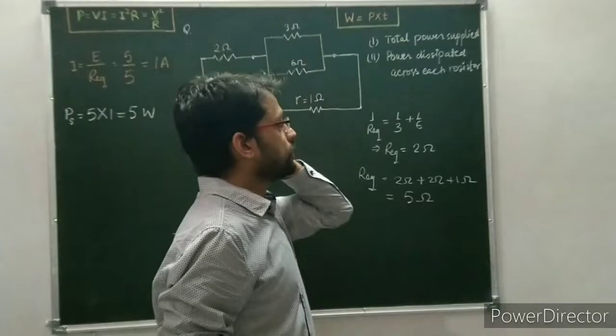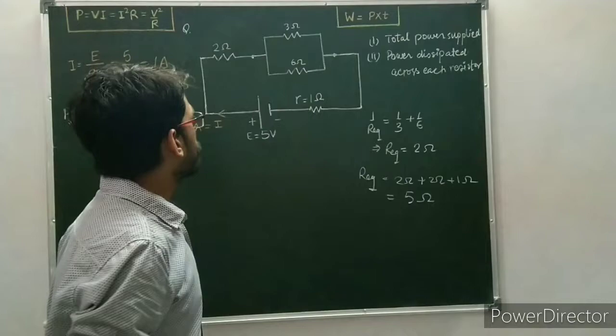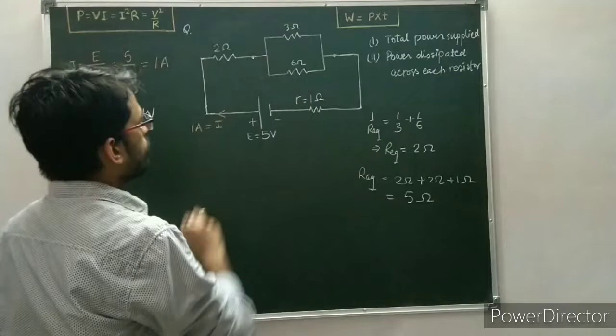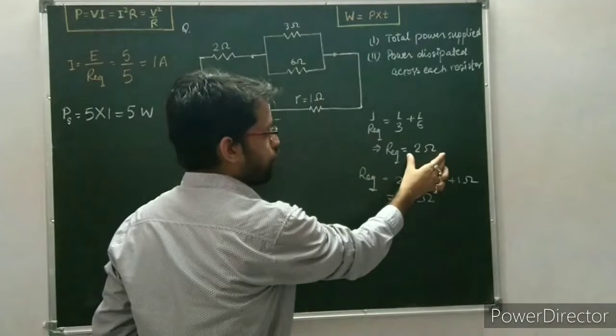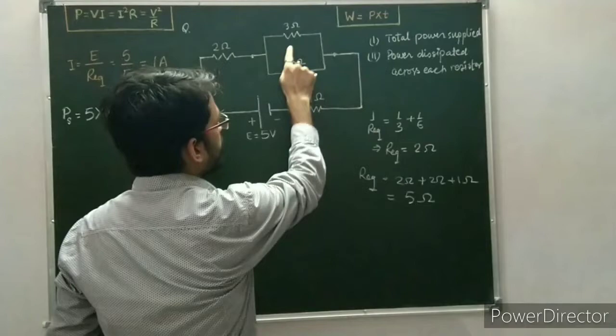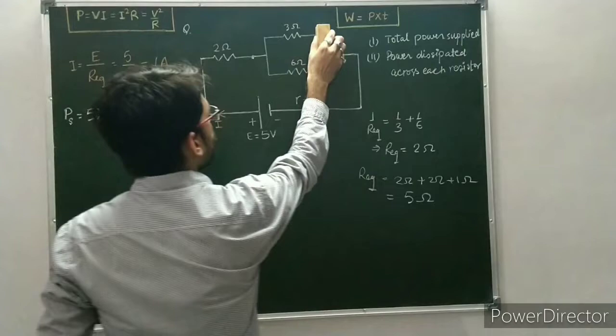Now come to the next part of the question: find the power dissipated across each resistor. To calculate the power across each resistor, we replace the parallel combination by its equivalent — that is, a 2 ohm resistance. We remove the parallel combination and place a single resistance of 2 ohm.